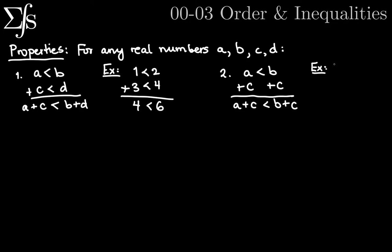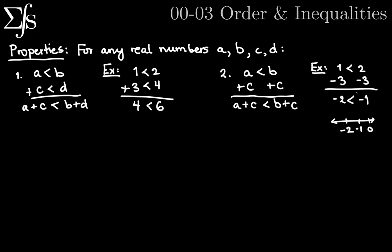For example, one is less than two. Let's do a subtraction — subtract three from both sides. One minus three is negative two, and two minus three is negative one. Negative one is to the right of negative two, so this checks out. Over here we saw one, two, three, four, five, six — six is bigger than four, and that all works.